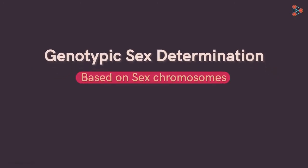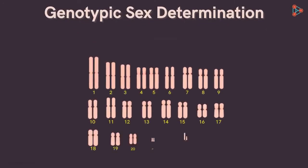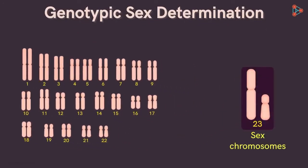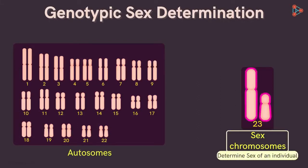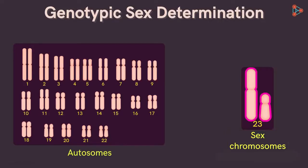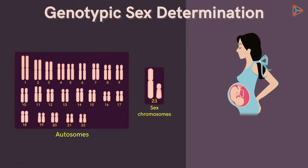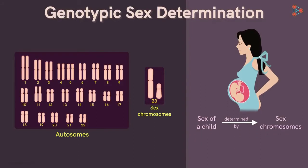We know what sex chromosomes are. In humans, for example, the last pair is the sex chromosomes, while the first 22 pairs are called autosomes. Similarly, in many other organisms, the sex chromosomes help to decide the sex of an individual. In most mammals, including humans, the sex of a child is determined by the sex chromosomes, namely X and Y. Individuals with both X chromosomes are females, while those with one X and one Y are males.